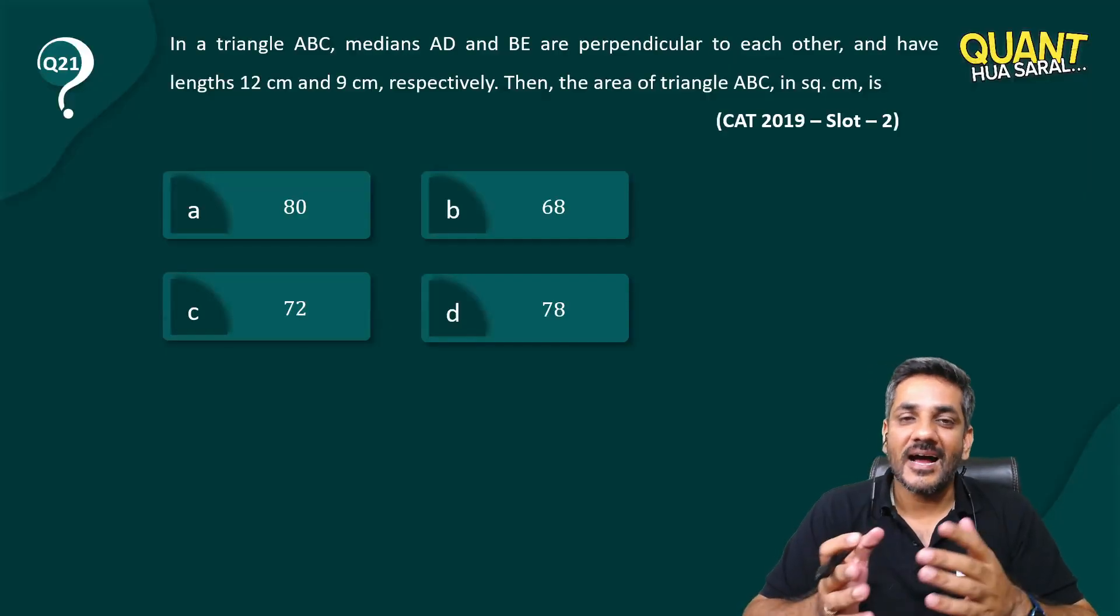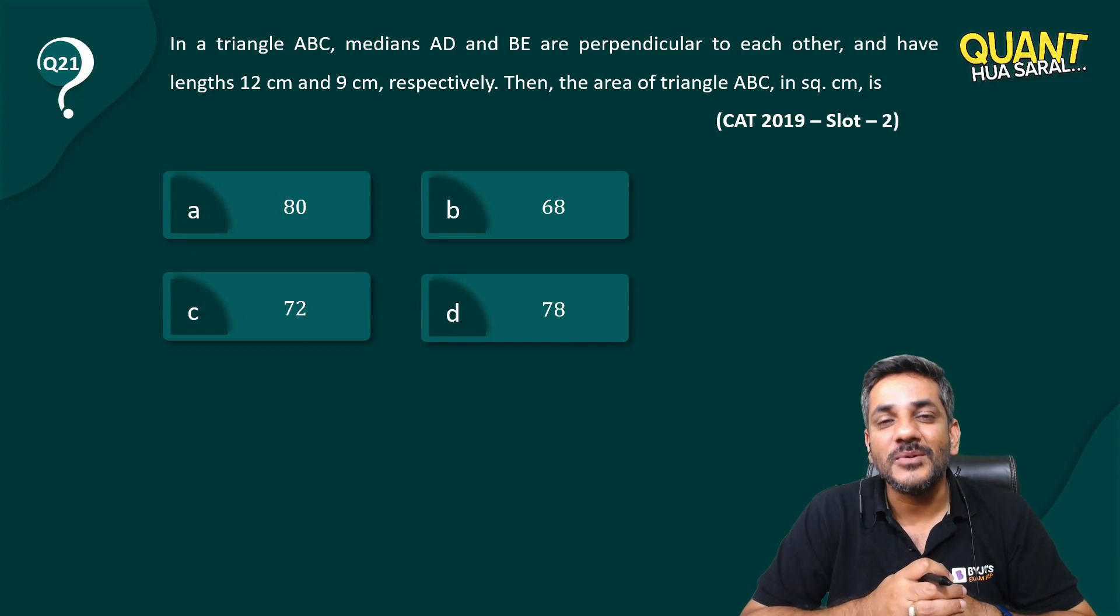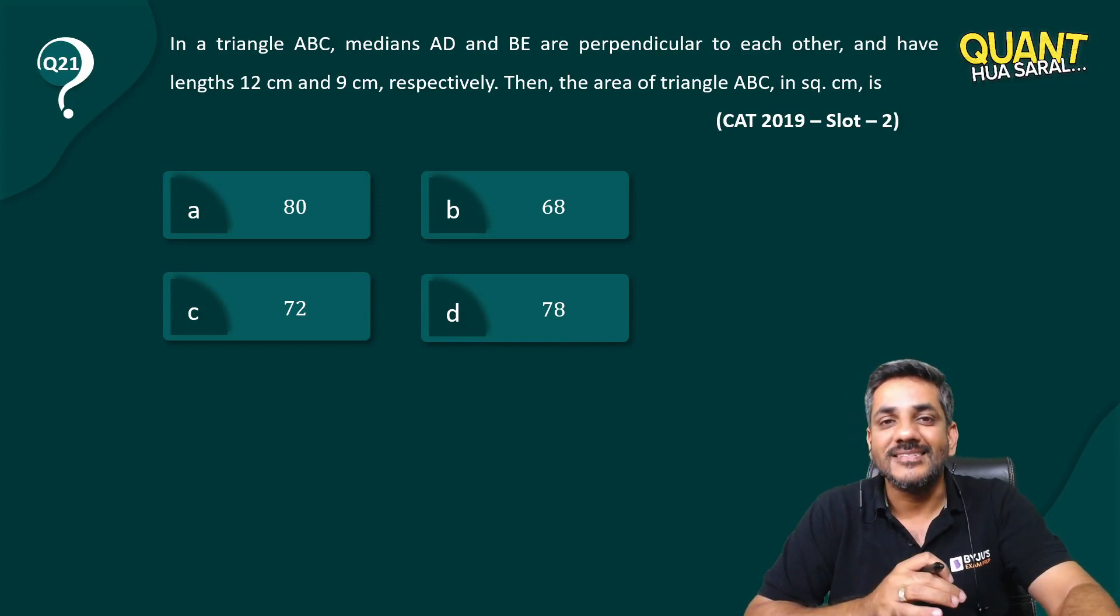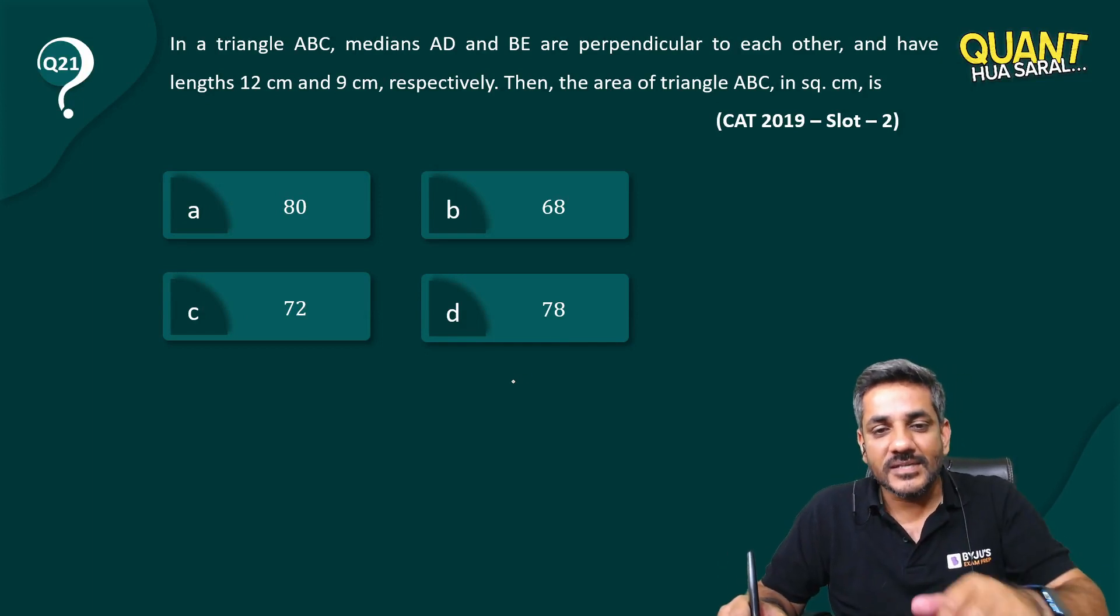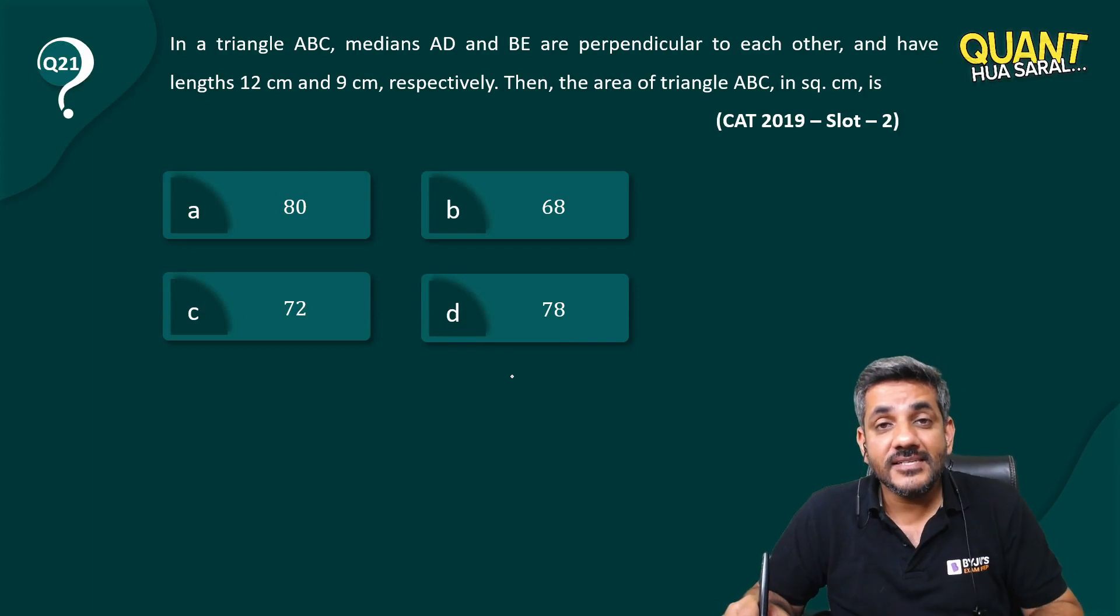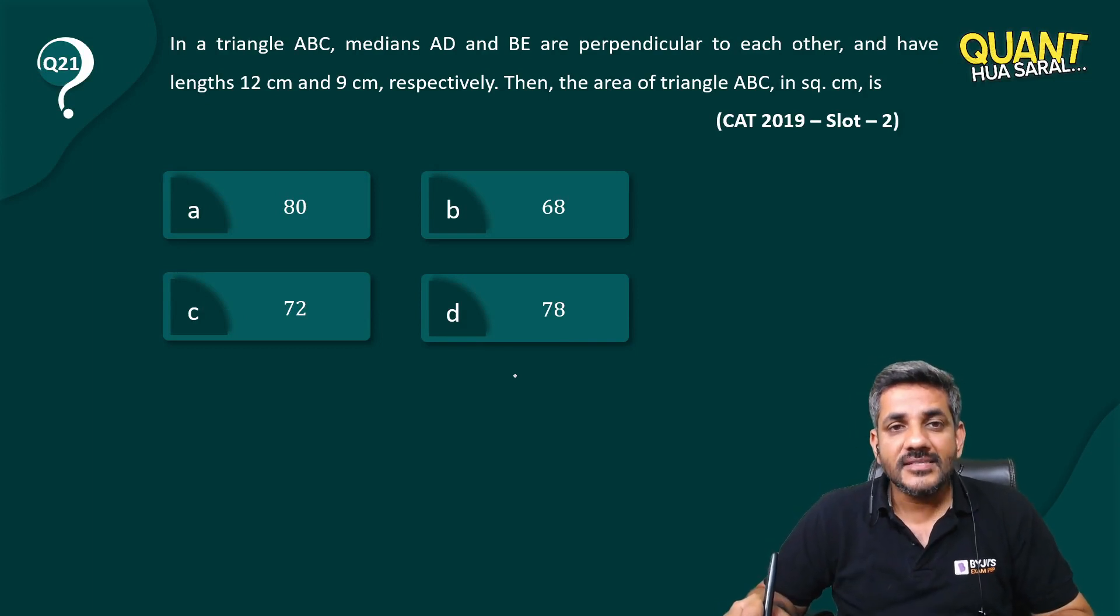Hello everyone, so here I am again with question number 21 of Quant Tukka Serial series. This is a question from CAT 2019 Slot 2. In a triangle ABC, medians AD and BE are perpendicular to each other.